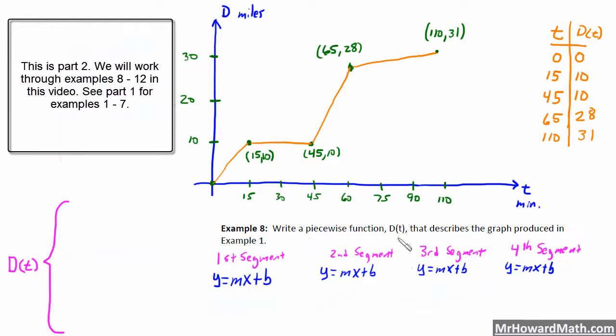Example 8 says write a piecewise function d of t that describes the graph produced in example 1. So here's our graph. We had four different pieces, 1, 2, 3, and 4.